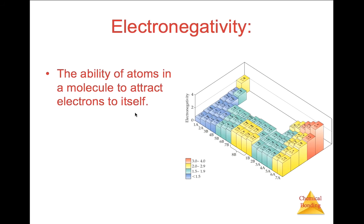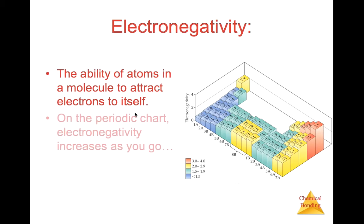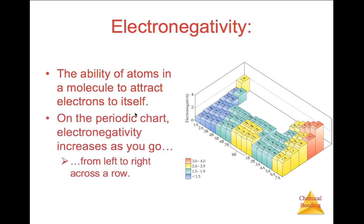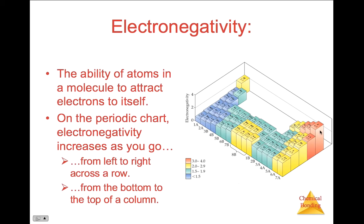We have a rating scale that will tell us who will attract electrons the most on the periodic table. This rating scale is a trend known as electronegativity — the ability of atoms in a molecule to attract electrons to itself. On a periodic chart, electronegativity increases from left to right across a row and from bottom to the top of a column. Memorize this trend: left to right, bottom to top. The most electronegative element in the periodic table is fluorine. The least electronegative non-radioactive element is cesium. Nitrogen, oxygen, and fluorine are pretty much the most electronegative. Chlorine is a close fourth.